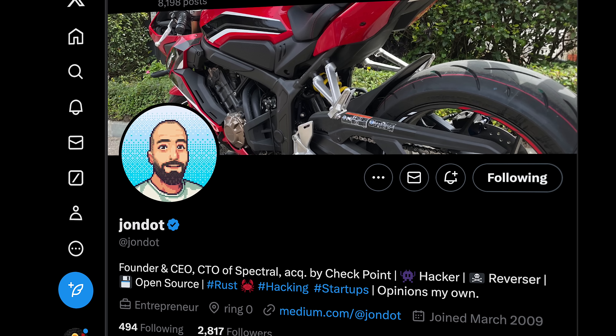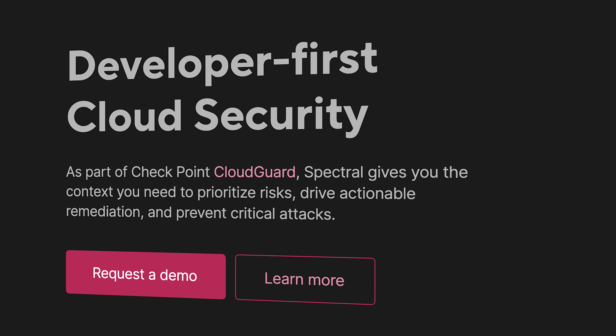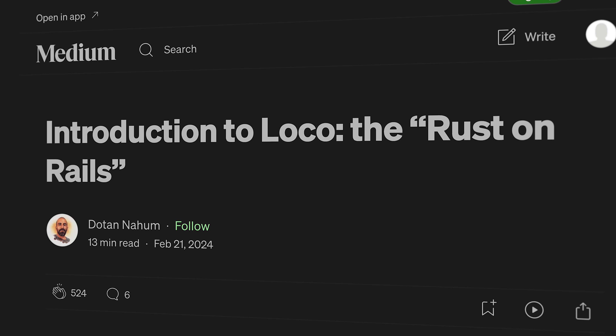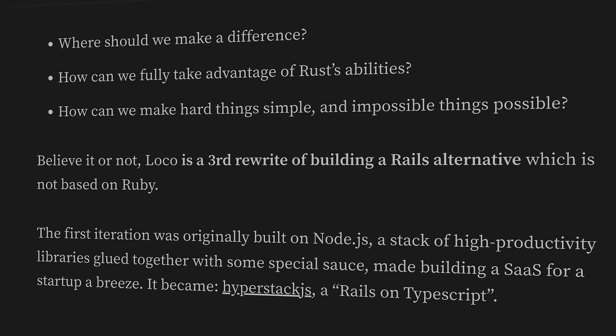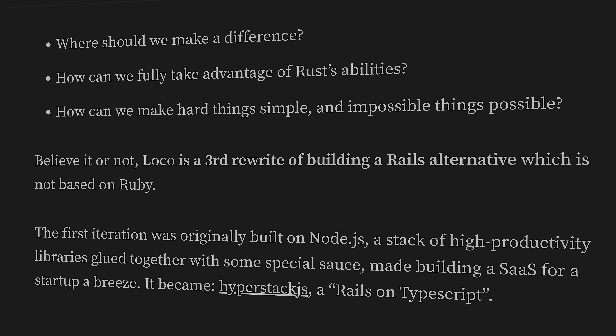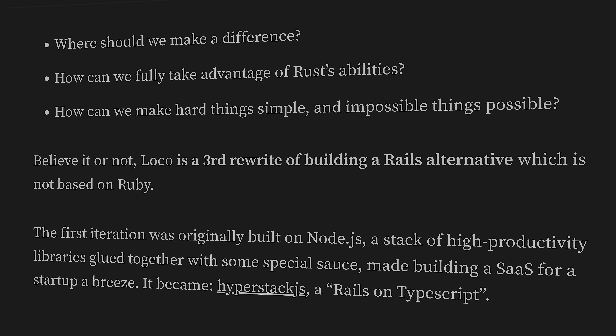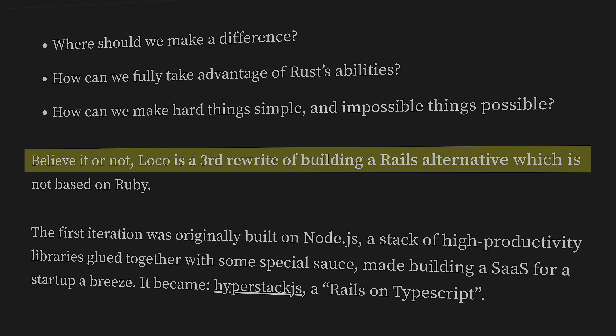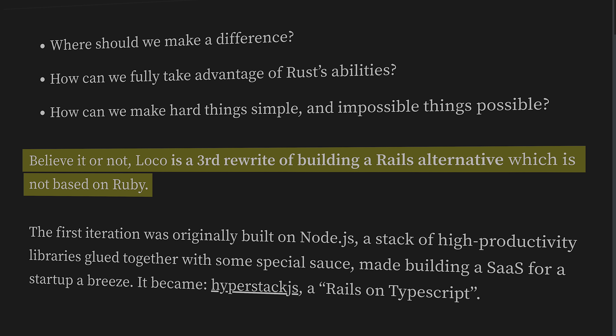Now let's zoom out for a second because loco actually has a pretty interesting backstory. It was created by Dotan Nahum, who created a data security company called Spectral, which was acquired by Checkpoint — so clearly he's got some business acumen. Dotan wrote a really great article about his journey and rationale for creating loco. One interesting thing is that it was not his first attempt at making a Rails-inspired framework in another language. As he says, believe it or not, loco is a third attempt at building a Rails alternative which is not based on Ruby. Talk about persistence — the resilience kind, not the database kind.